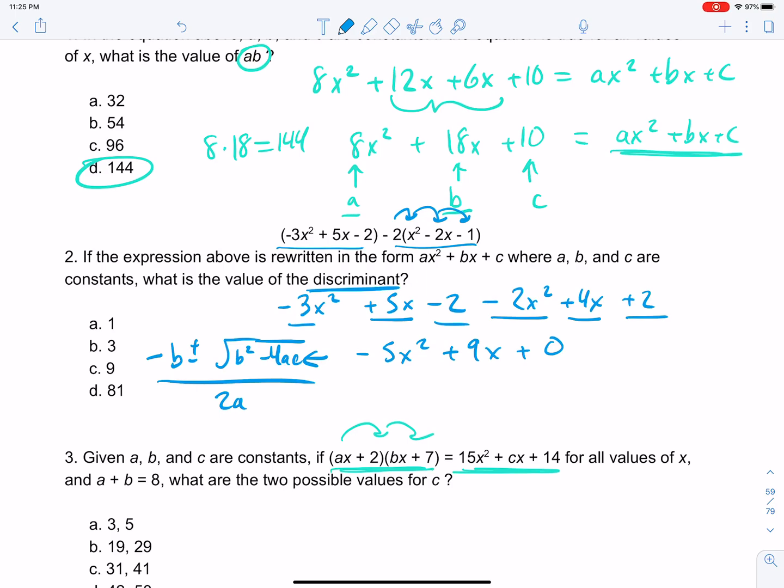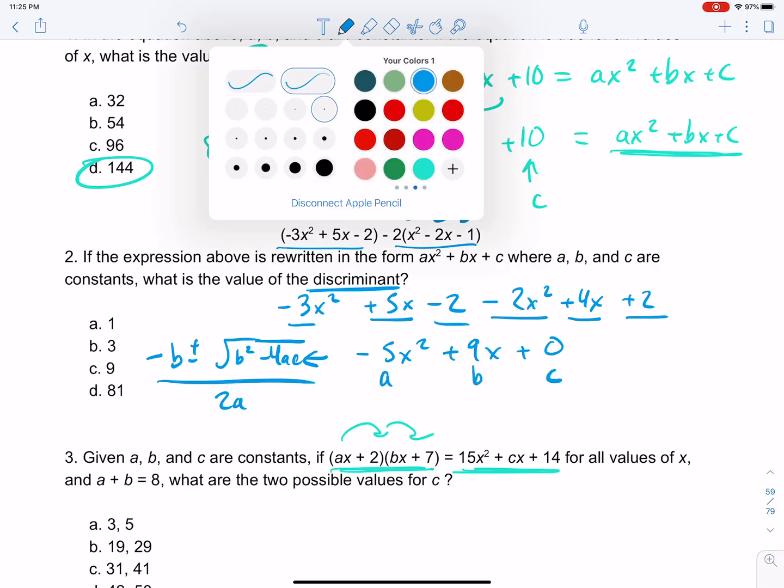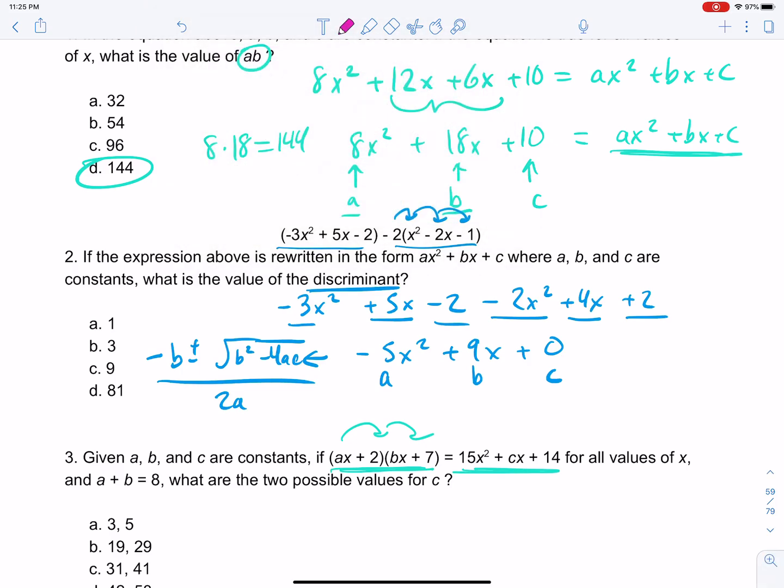So here's what we're going to do. This is our a, this is our b, this is our c. So b² minus 4ac. B squared would be 9 squared, which is 81, minus 4ac. So that's 4 times a would be negative 5, and our c would be 0. So 81 minus anything times 0 is 0. So it's 81 minus 0, which is 81d.